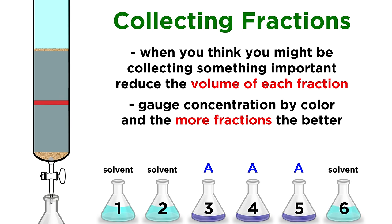That's why we want to use very small fractions right when we think our product is exiting the column, because there could be fractions on either side that contain our product along with something else, and we want to minimize the amount of product that we have to throw away due to impurity, because we don't want anything else to be collected, only our target.